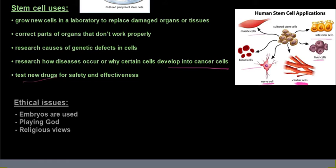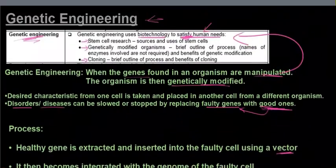Using stem cells, there will always be ethical issues involved. The main reason is because embryos are used. The debate is that embryos could develop into a potential person — it could be a life that you are technically taking away. People also feel that scientists are playing God by creating new things, and there are religious views that are against it. That is what you need to know under stem cells.